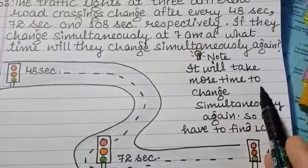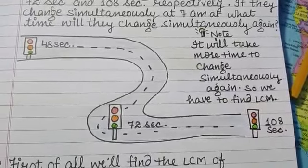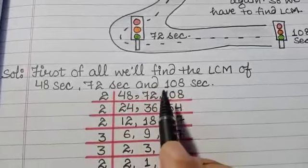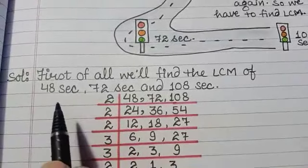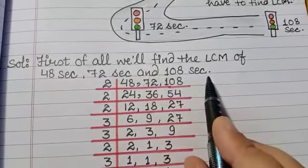To find the bigger time, bigger number, we have to find the bigger number, and for bigger number we will find LCM. Solution: First of all, we will find the LCM of 48 seconds, 72 seconds, and 108 seconds.